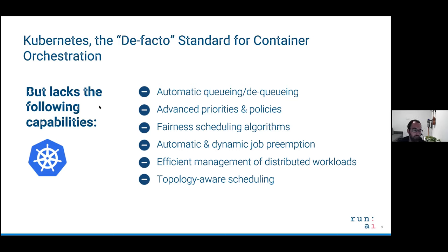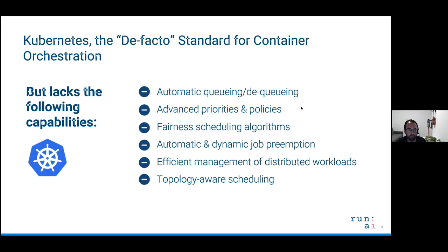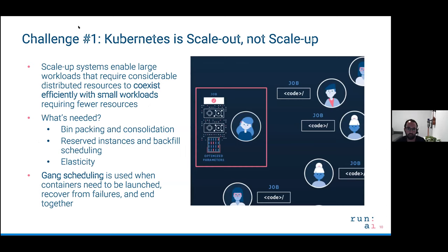Kubernetes comes with a built-in component called the kube-scheduler, which is in charge of scheduling pods on nodes. Based on the pod or job definition, if the job requests one GPU, it will look for a node that has a free GPU and schedule it there. But it does not have automatic queuing and dequeuing, cannot manage multiple queues, and does not provide a fairness algorithm to make sure researchers fairly use the GPUs. Kubernetes was not designed for running deep learning training jobs — it was built for deploying microservices, so it's simply not what it was meant for.